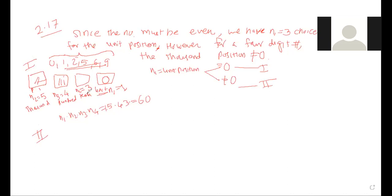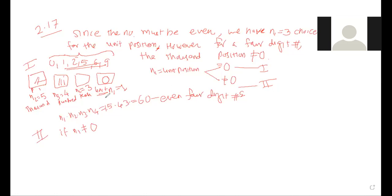The reason we divided the unit position into two parts is that 0 is an even digit so it could occupy the unit position, but it cannot occupy the thousands position. This picture approach — drawing four cells for the four digit positions and analyzing each case — helps avoid confusion. Total: 156 outcomes for even four-digit numbers from {0, 1, 2, 5, 6, 9}.